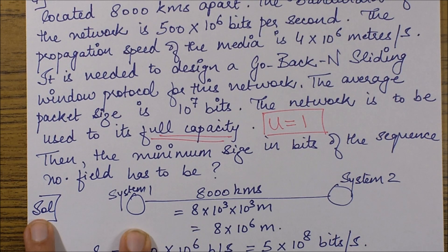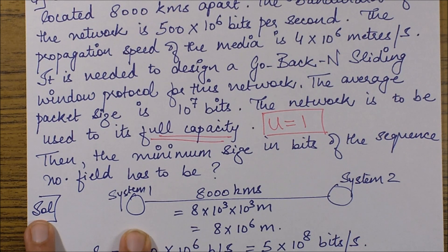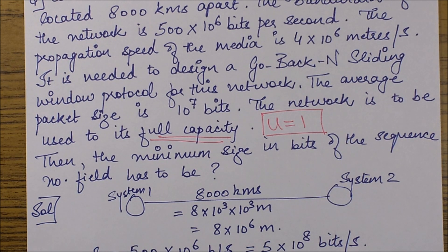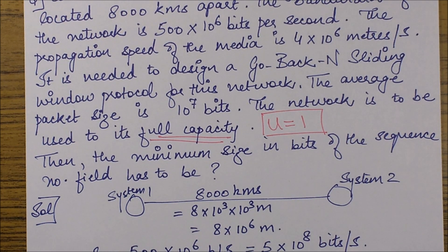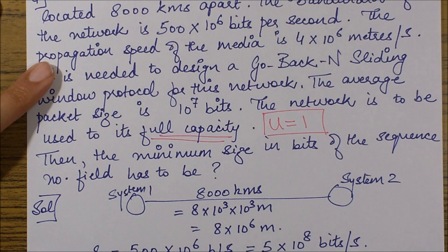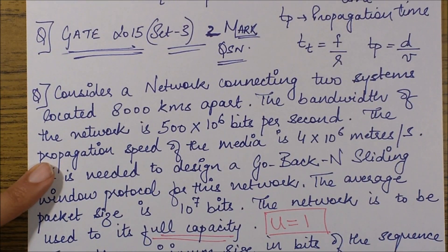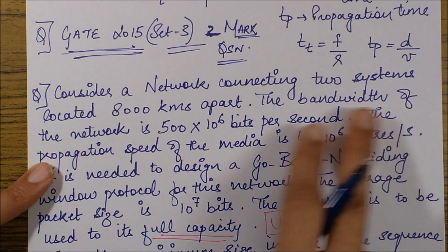It is actually requiring us to find the value of W and then give the actual number of bits required to form that number of combinations. Let's see how we solve this question. It is a very important question from the point of view of understanding Go-Back-N sliding window protocol.